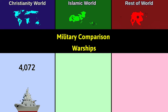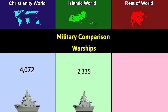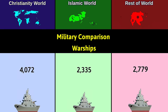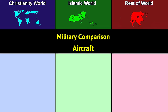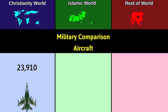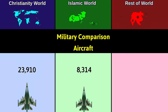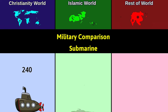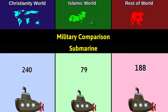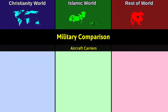Warships: Christianity 4,072; Islam 2,335; Rest 2,779. Aircraft: Christianity 23,910; Islam 8,314; Rest 10,638. Submarines: Christianity 240; Islam 79; Rest 188.